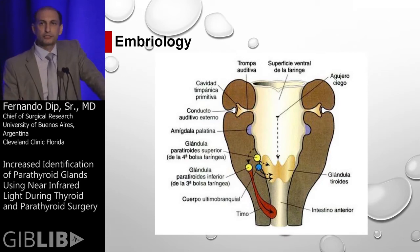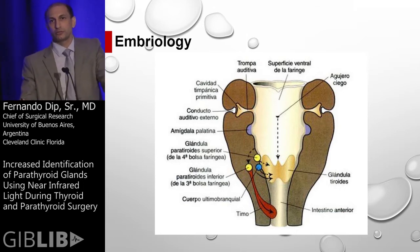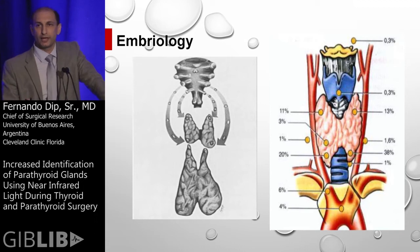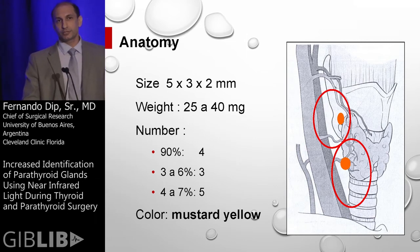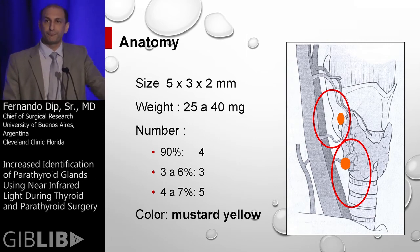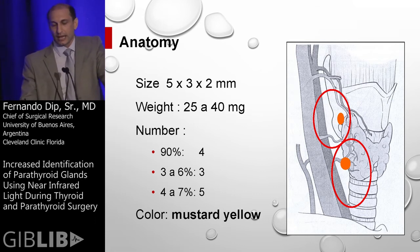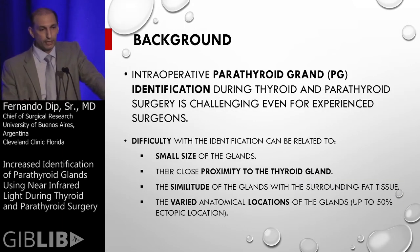We also need to know about the embryology of the glands. The reason is that the number of glands we are going to have and the location of the glands is not constant. We know that in 90% of cases we are going to find four glands, but we may also find three glands in the neck and sometimes five glands. As you can see, the color is really very similar to the color of the thyroid gland.